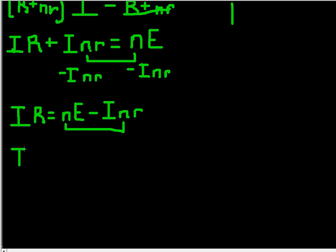So we can rewrite this as IR equals n, because we take out the n, because it means the same thing. If we just distribute n times E minus IR. So all I did was take out the n.